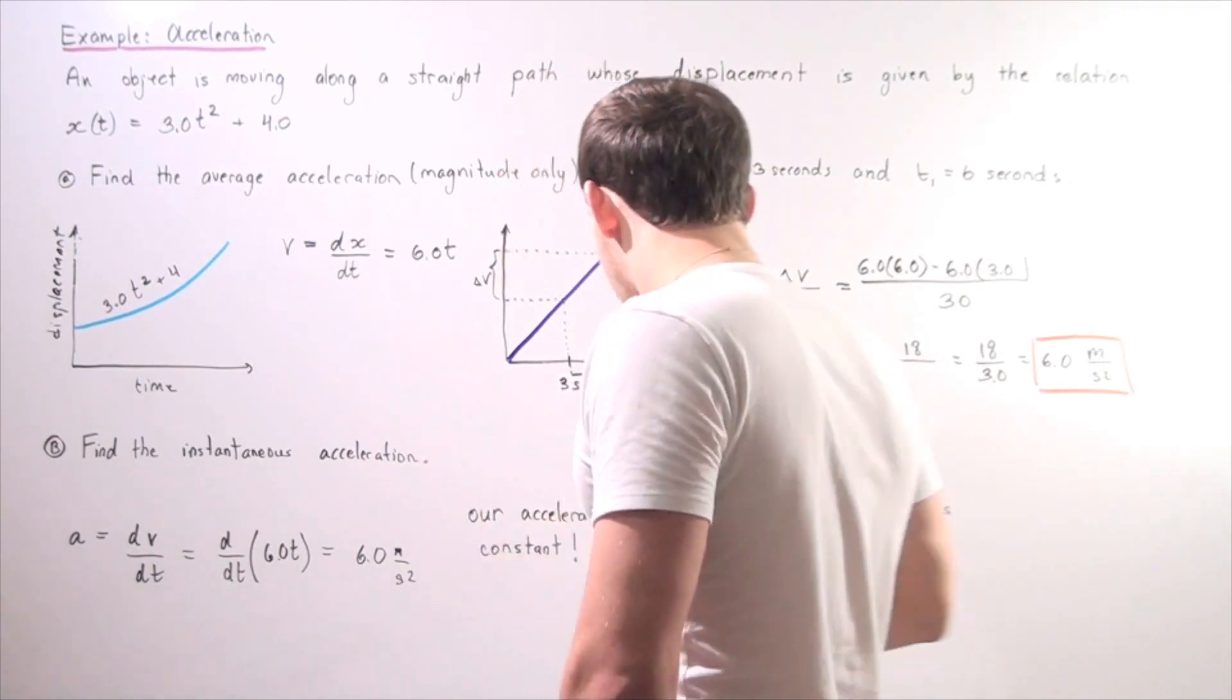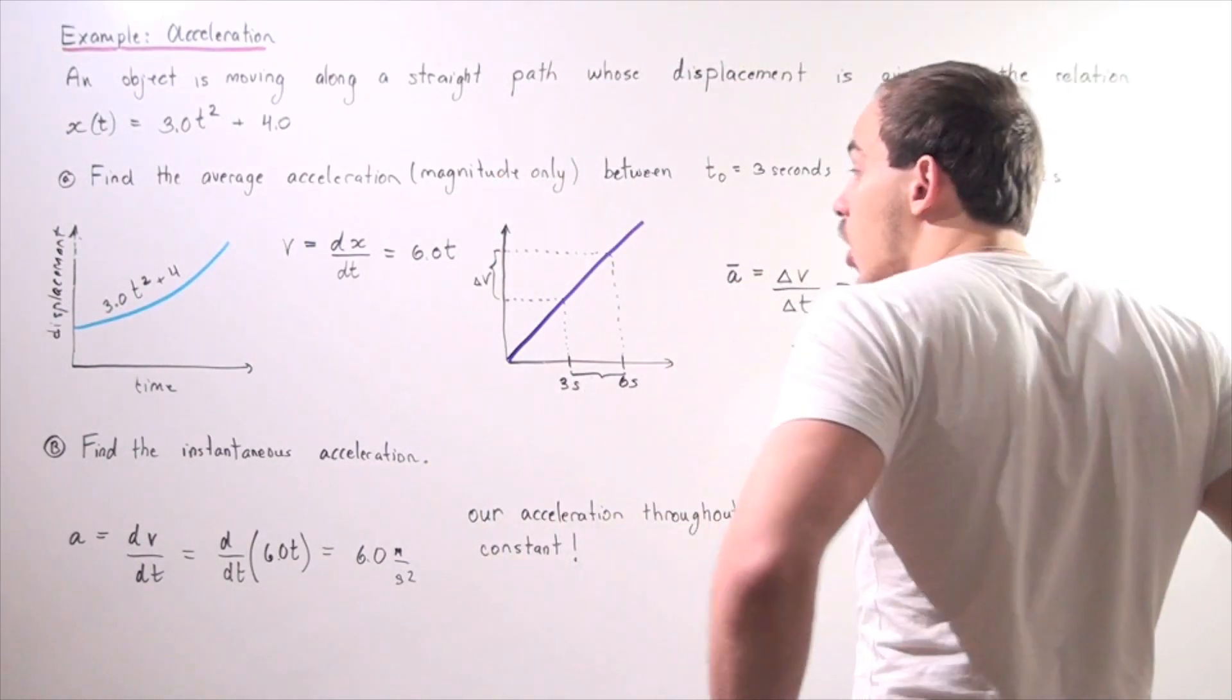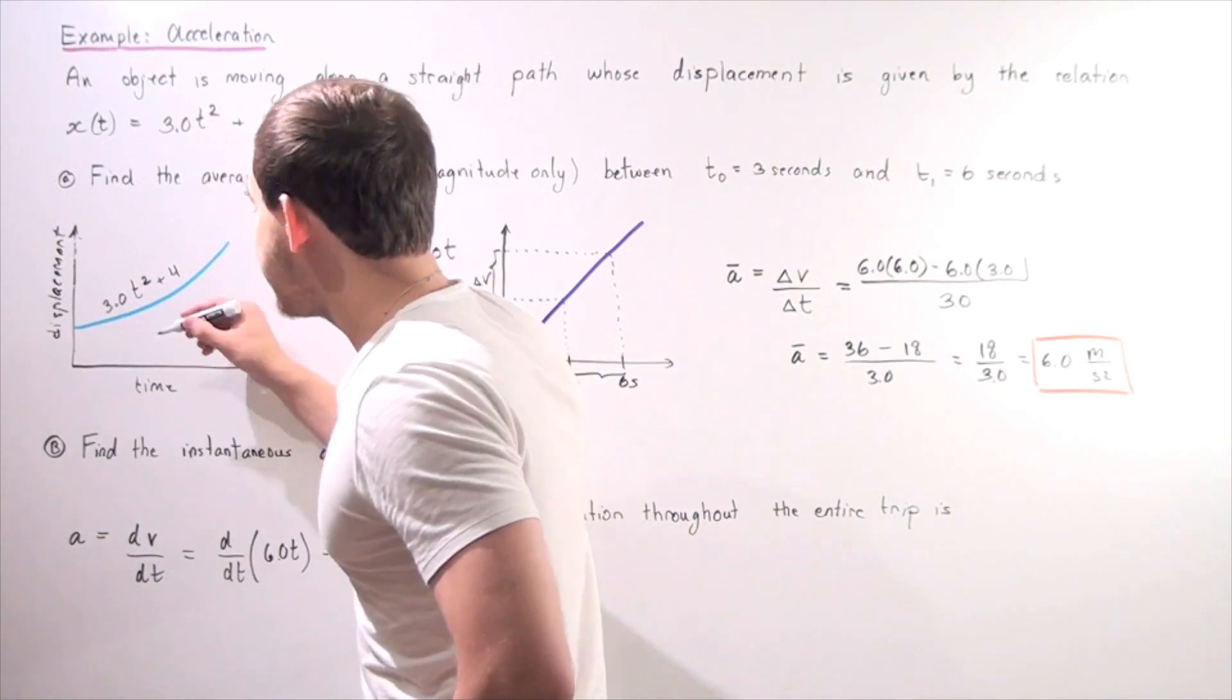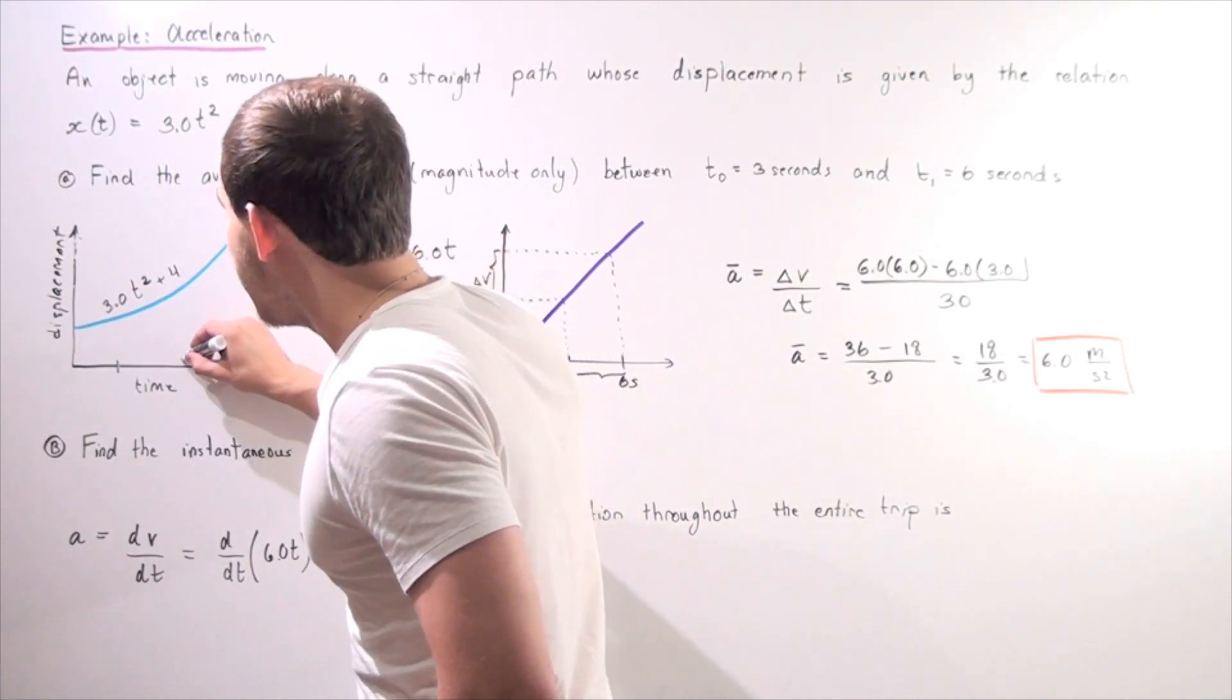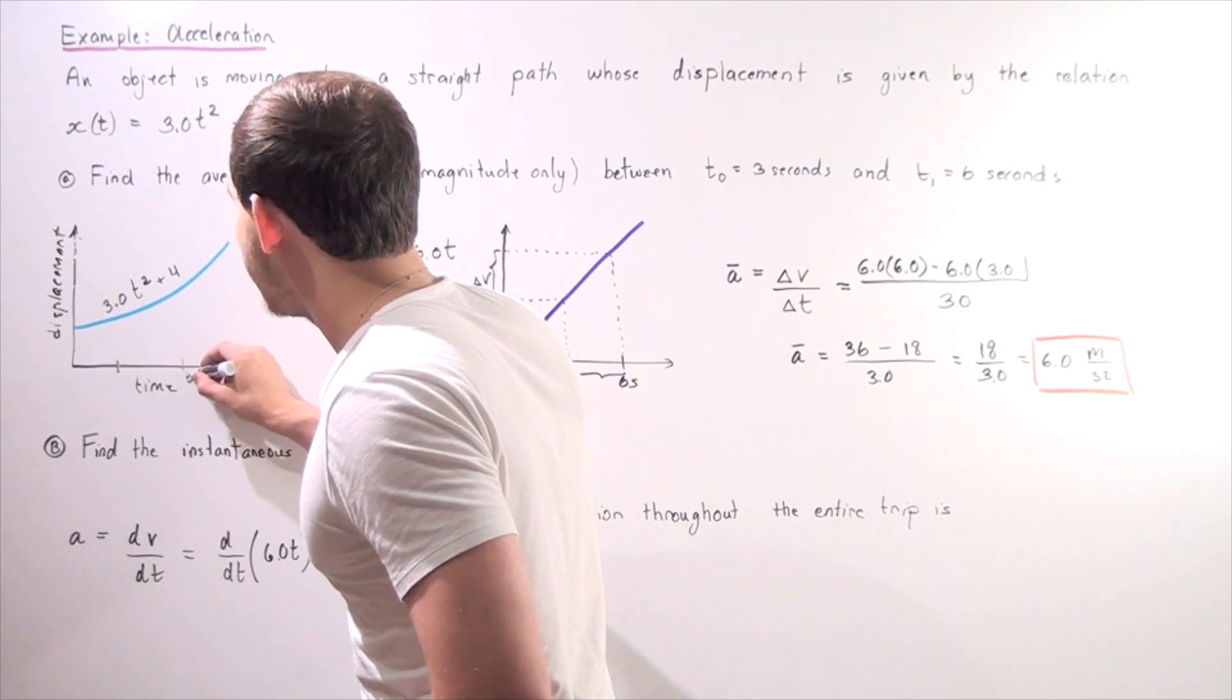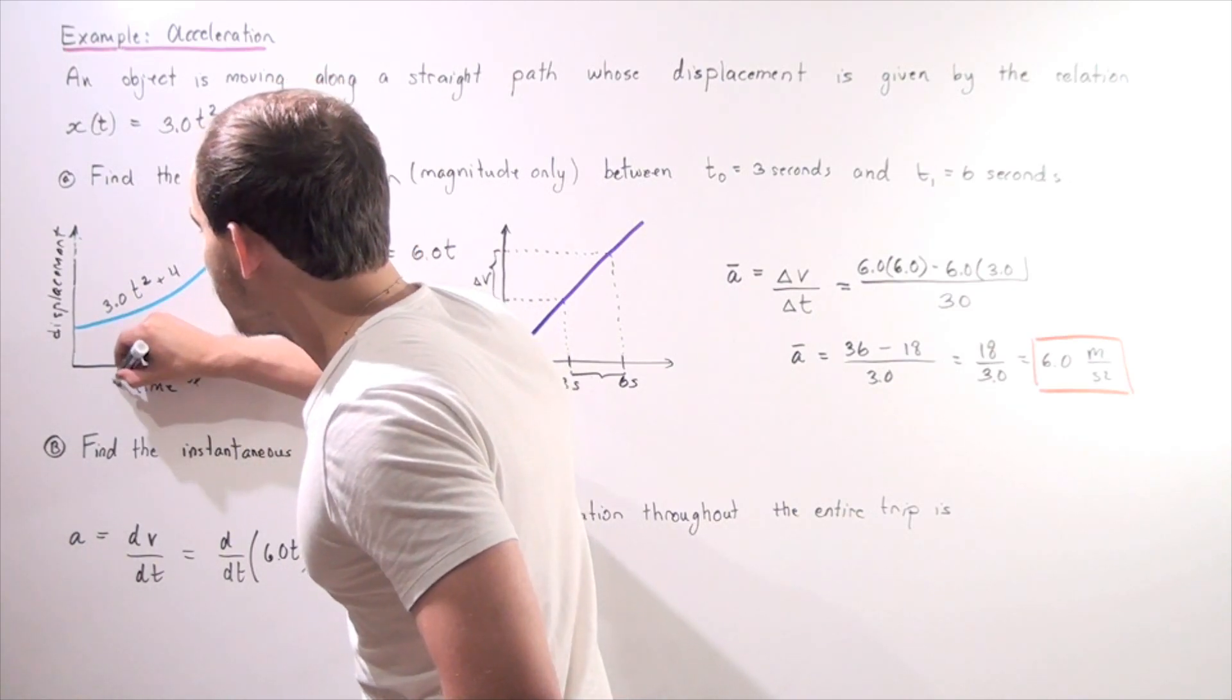Now, what we want to find is we want to mark our time not. Let's say our t₀ is at this point and our time final is at this point.